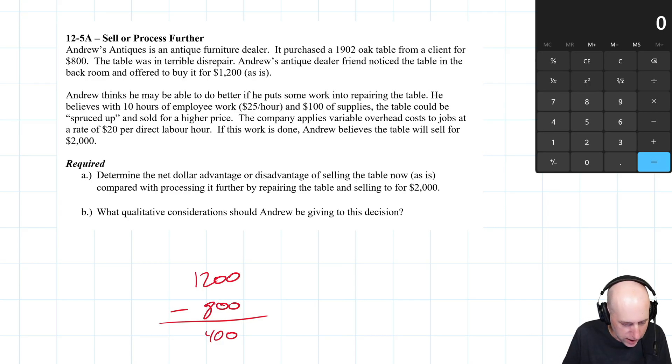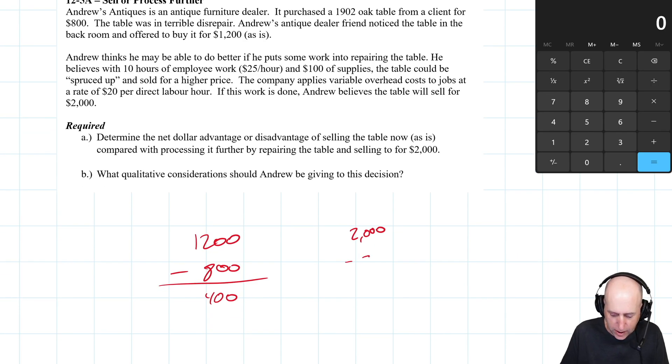In any event, the second alternative is we can take $2,000 if we do some work on it, and again that includes the $800 cost. That's why it's not relevant. If we eliminate it from both sides, we come to the same conclusion, but I'll keep it in there just for the conversation. So again, it's a $2,000 table. We have $800 into it already, and we're going to invest 10 hours employee time at $25 an hour.